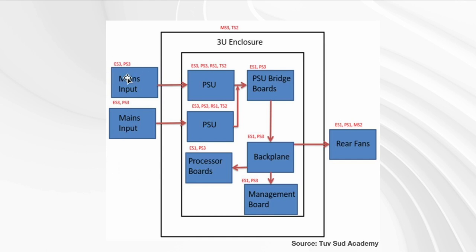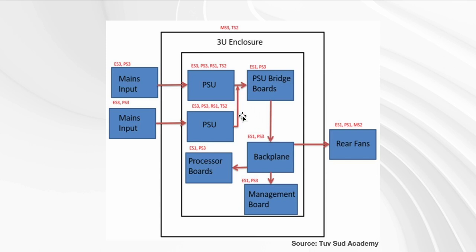Looking at energy sources: mains input is always ES3, and then it goes down — ES1, ES1, ES1. A rear fan, however, is a mechanical source at ES2 because there are some moving parts. That's outside the scope of this training. At least you really clarify what is ES3, ES2, and ES1, and based on that you can plan for your safeguards.